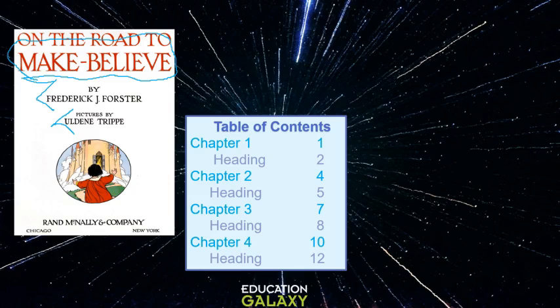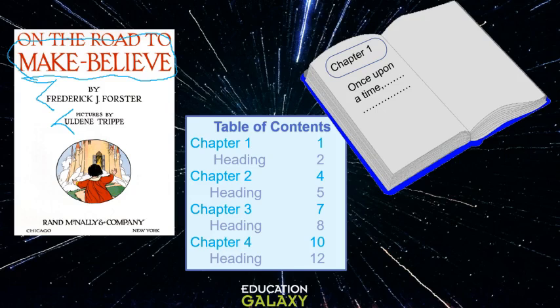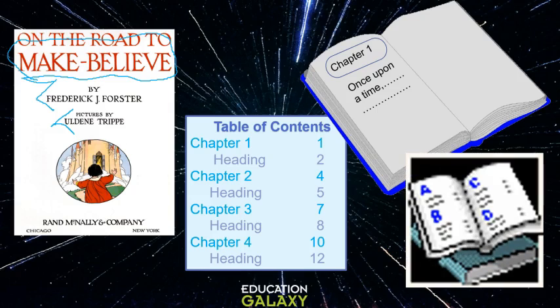Next we have a section heading in the book. It divides the text into chapters or sections and explains what the chapters or sections will be about. A glossary appears at the end of a book and provides the definitions of some of the words found in the text.